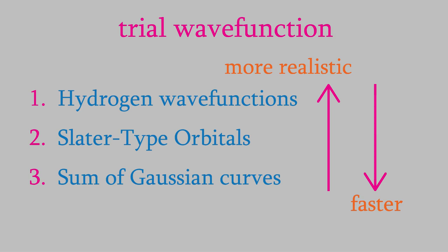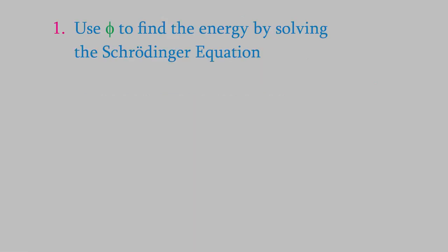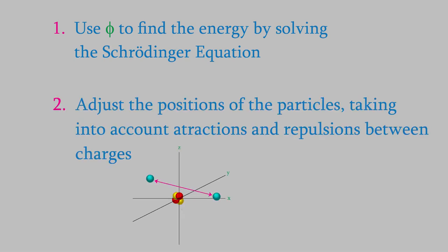Once we've constructed our trial wave function, what do we do with it? In the last video, I gave you an overview of the process: we use a trial wave function to solve the Schrödinger equation and calculate the energy of the system, then make adjustments to the positions of the electrons and nuclei to account for repulsions between like charges, and repeat that process many times. In the next video, we'll look more closely at how exactly that's done — it's a process real researchers use all the time, and as we go through that cycle, the positions of the particles and the energy we calculate become more and more accurate. I hope you'll join me for that. But until next time, have a good week.